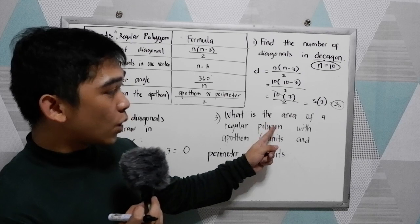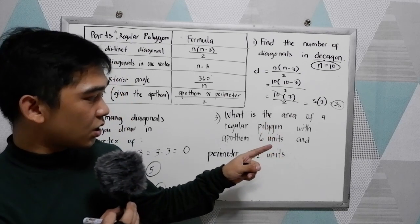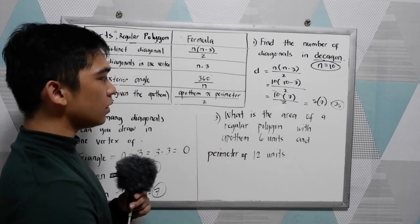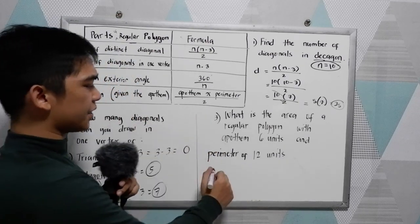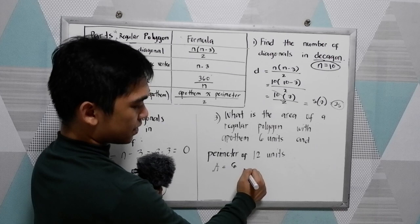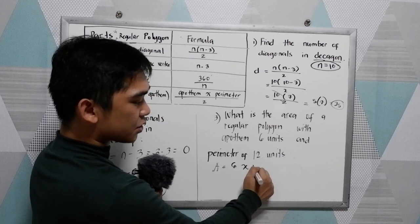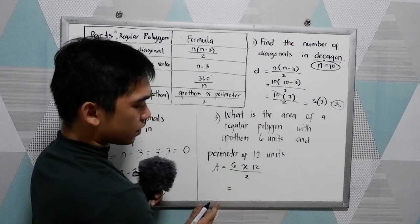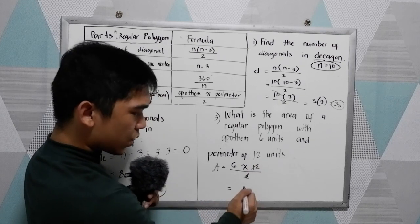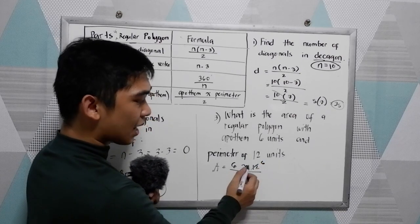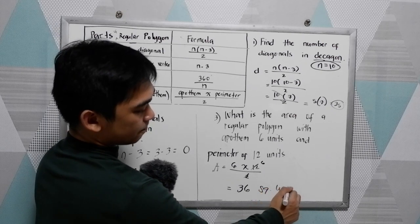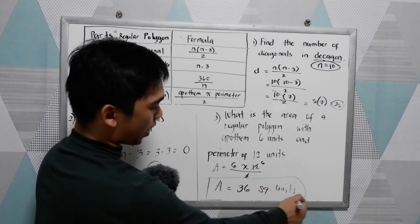Our last example: what is the area of a regular polygon with apothem 6 units and perimeter of 12 units? Using the formula: Area = apothem times perimeter all over 2. Our apothem is 6 and our perimeter is 12, so we have 6 times 12 all over 2. Using cancellation, 12 and 2 cancel to give 6, so we have 6 times 6 = 36 square units. The area is 36 square units.